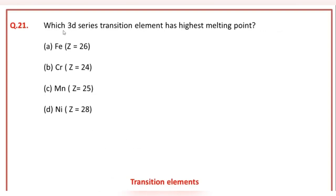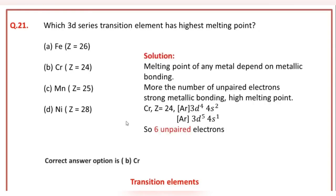Which 3D series transition element has the highest melting point? The correct answer option is B, that is Cr (chromium).